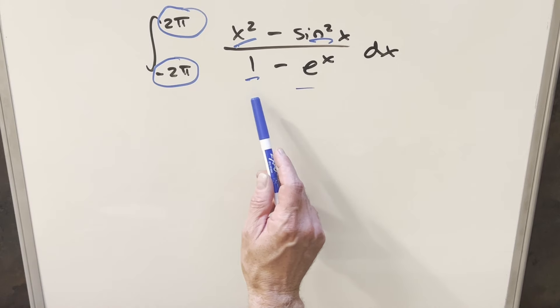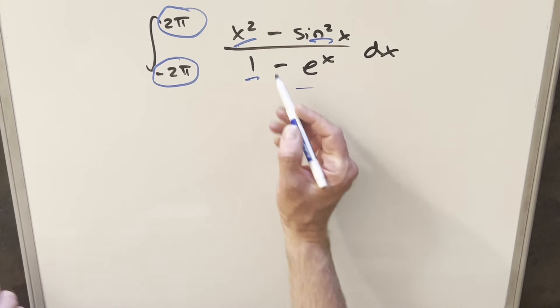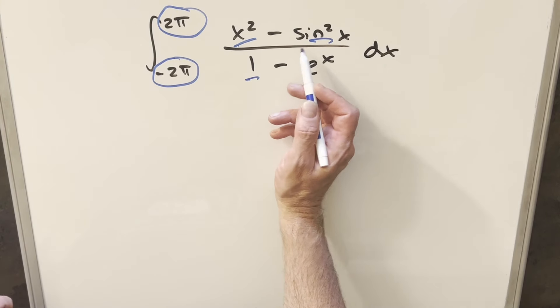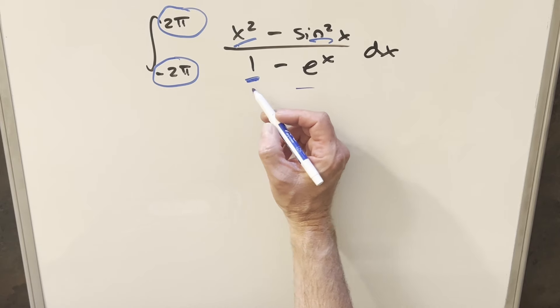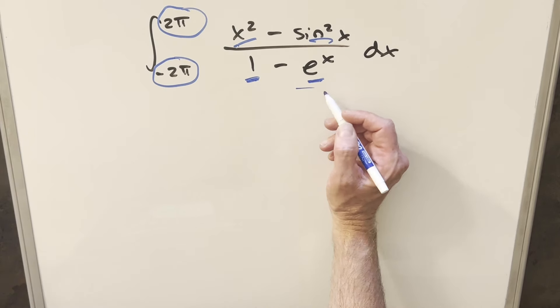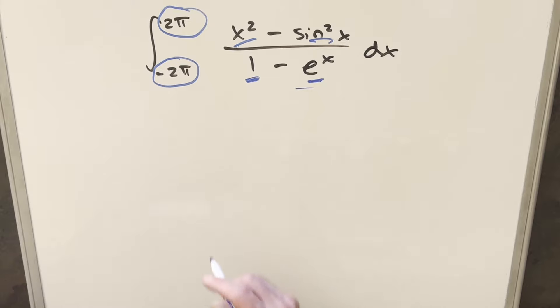The other thing we could check for is just to see if the whole thing's even. The numerator is definitely even with the terms squared. A constant value is actually even, but this value is not even or odd. So we can't really use that simplification either.